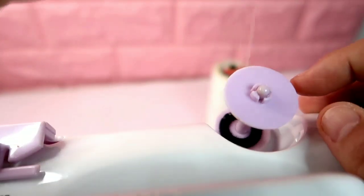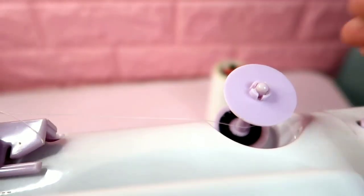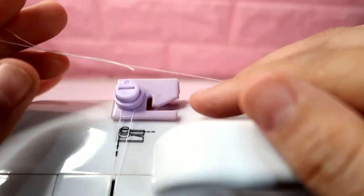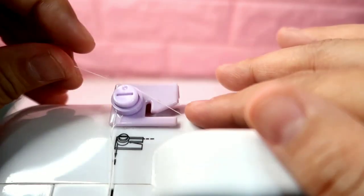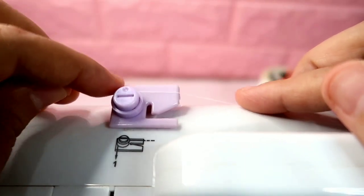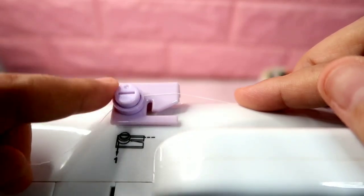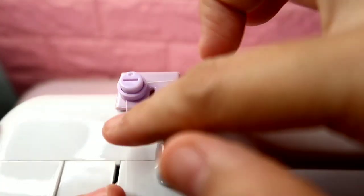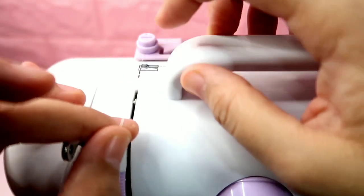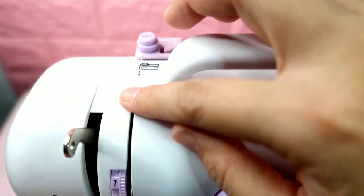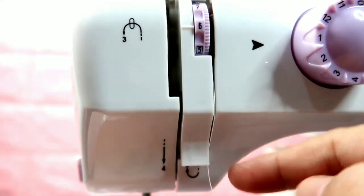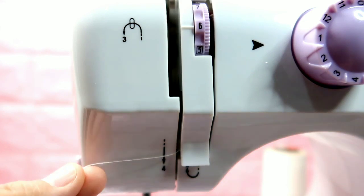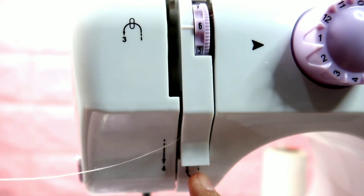Next, we wrap it here. Then we place it here. You can see that's step number one, and then next is here. It will pass through the tension dial area, then you wrap it around. You can see number three is marked on this part.